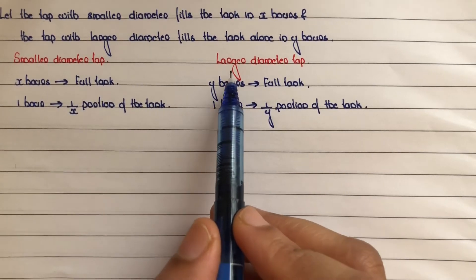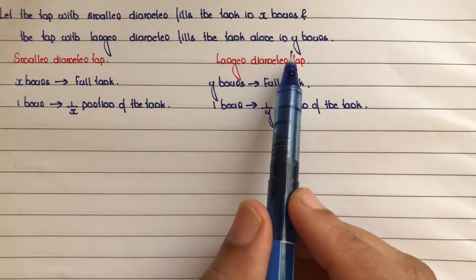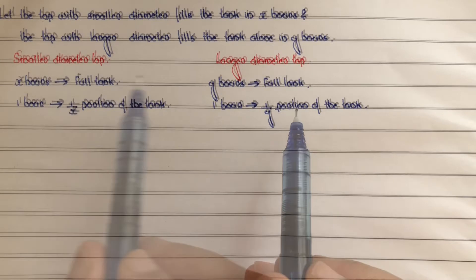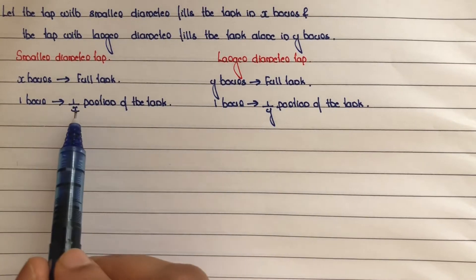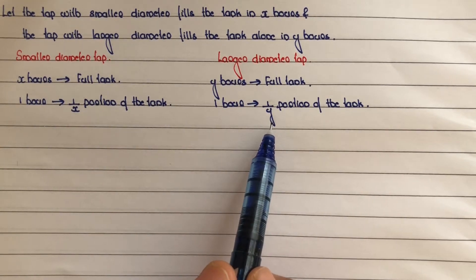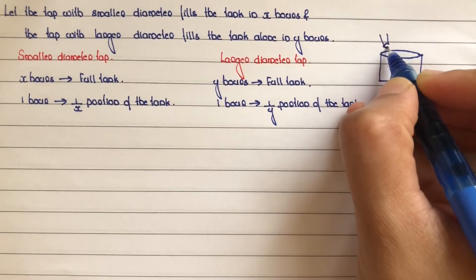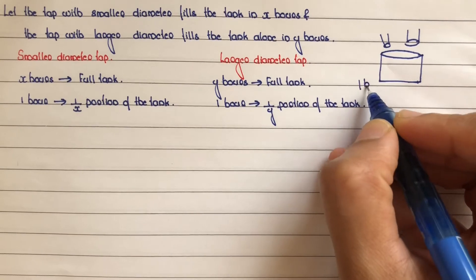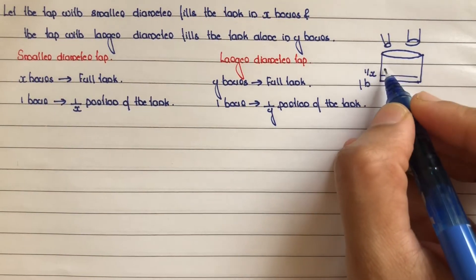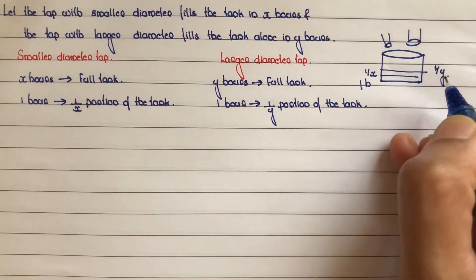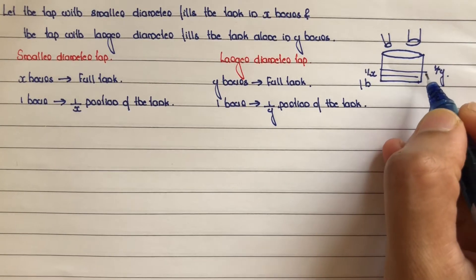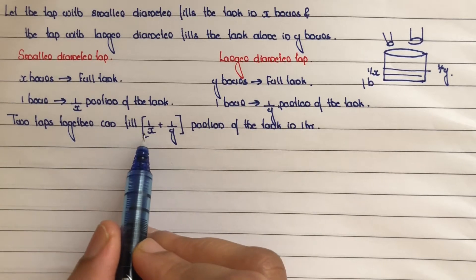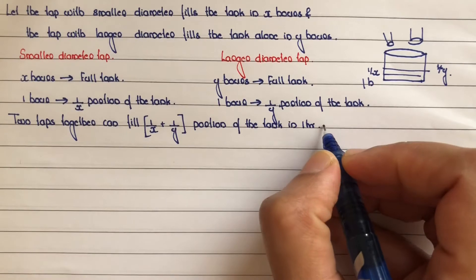In y hours we can fill the full tank. So in 1 hour we can fill 1 by y portion. Together in 1 hour, the smaller diameter tap fills 1 by x portion and the larger diameter tap fills 1 by y portion. So together in 1 hour, the two taps fill 1 by x plus 1 by y portion of the tank. Consider this as equation number 1.